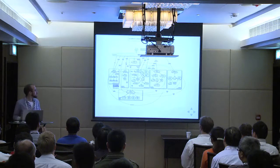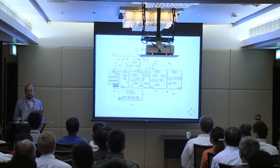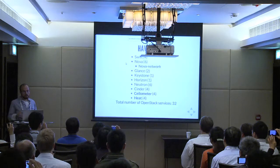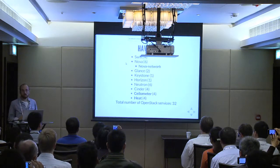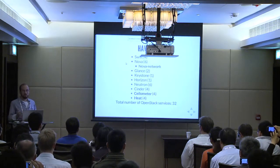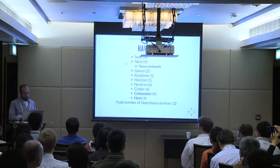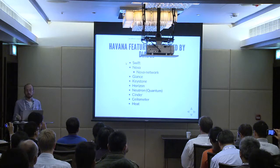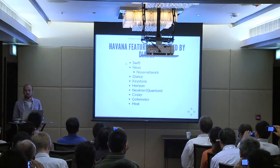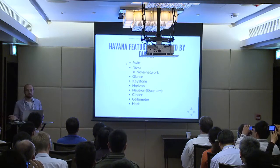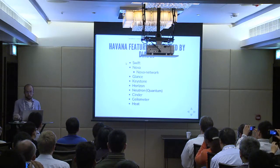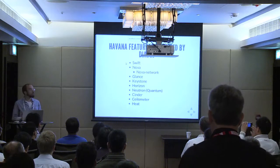This is the Grizzly diagram — I unfortunately don't have the slide yet for Havana. But Havana added two more services: Ceilometer and Heat. So now we have, I believe, nine projects running over 32 services. Looking back at Diablo versus Havana, a bunch of these didn't exist in Diablo, so we'll mostly ignore Horizon, Neutron, Ceilometer, and Heat for this presentation.